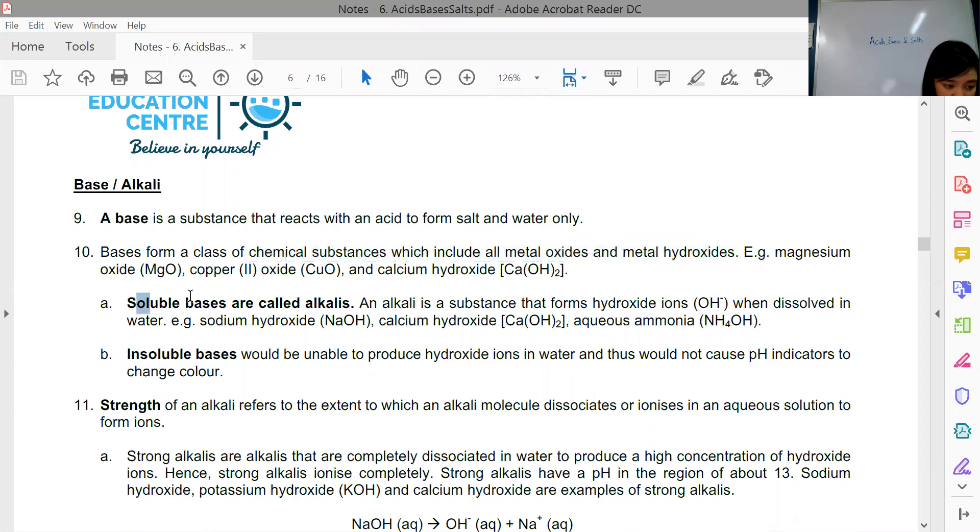If they are soluble bases, they are called alkalines. Alkalines will be metal hydroxides because they form hydroxide ions when dissolved in water, the OH- ion.